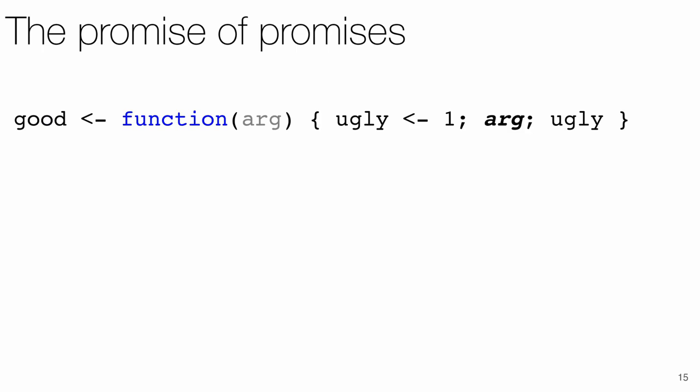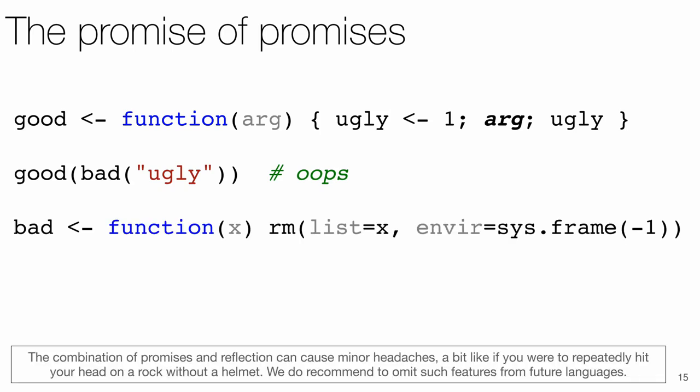The favorite example in our group is the good, the bad and the ugly. Warning, this takes a moment to wrap your head around. Good is a function that creates a local variable ugly and returns it, but in between it also forces its argument. If we pass this call to bad as a promise to good, and we have just the right definition of bad, the promise will reflectively reach into the environment of good and remove the ugly binding from it. This can cause any number of results, ranging from an undefined ugly symbol error to forcing accidental bindings.